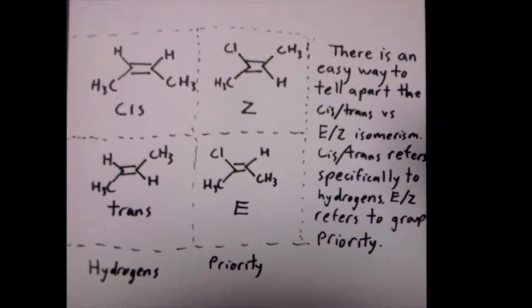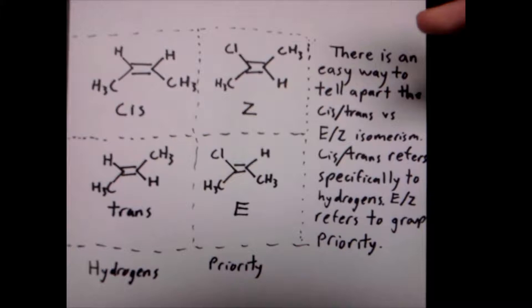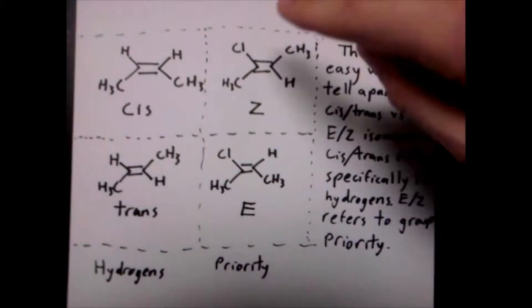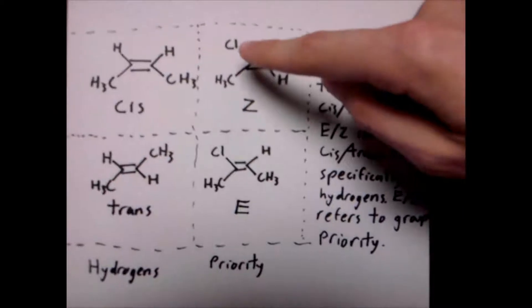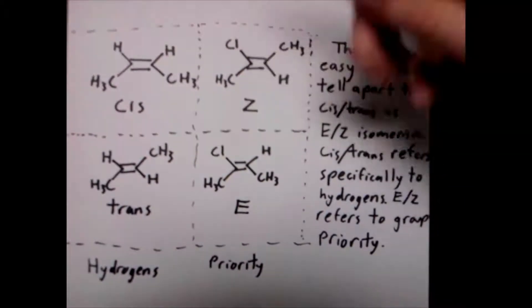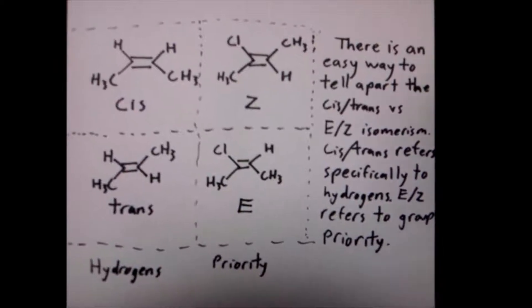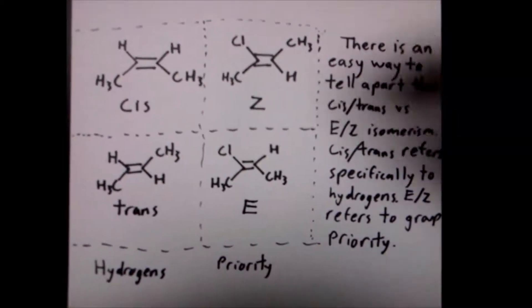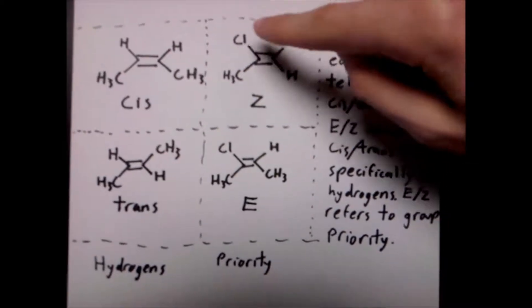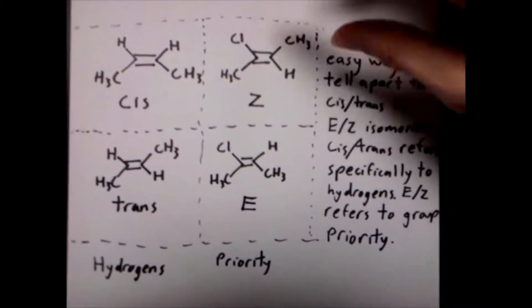And the Z and E isomerism is used when you have priorities instead of hydrogens, because you see there's only one hydrogen in both of these compounds. In this case, chlorine is the higher priority on this carbon, because it has a larger atomic number than the carbon does. And the carbon over here, obviously, is a higher atomic number than the hydrogen. So these are both the top priority groups.